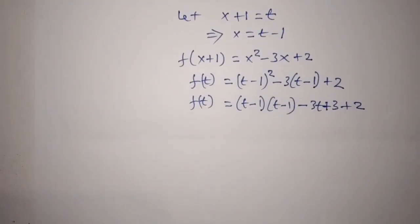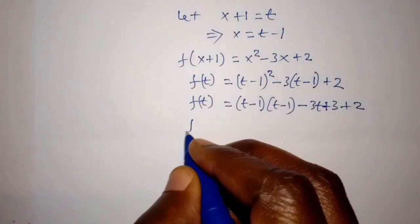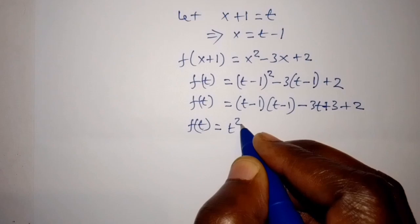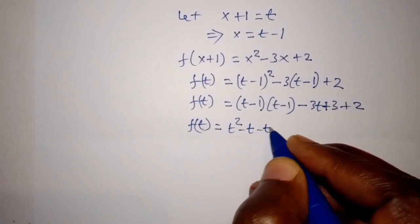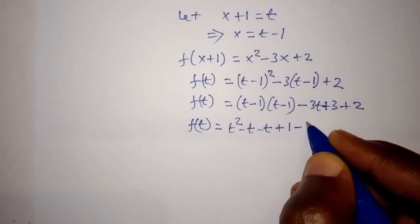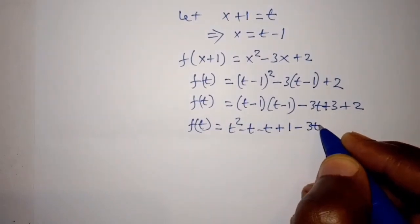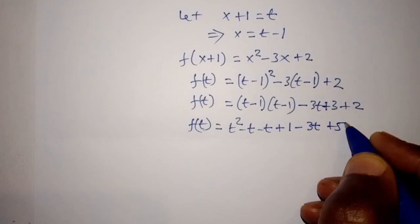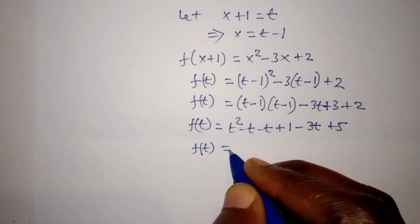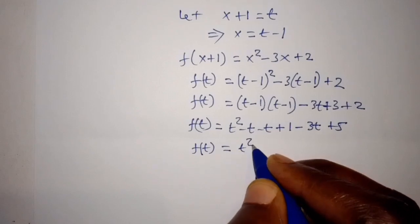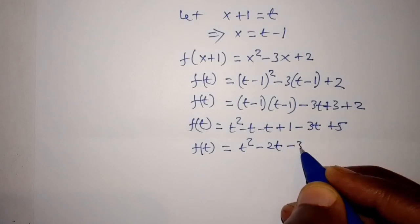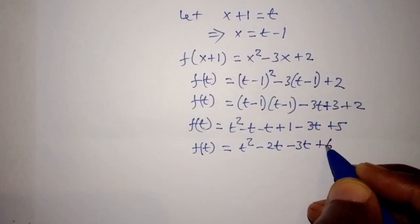And this is giving us f of t is equal to t squared minus t minus t plus 1 minus 3t plus 5. f of t is equal to t squared minus 2t minus 3t plus 6.